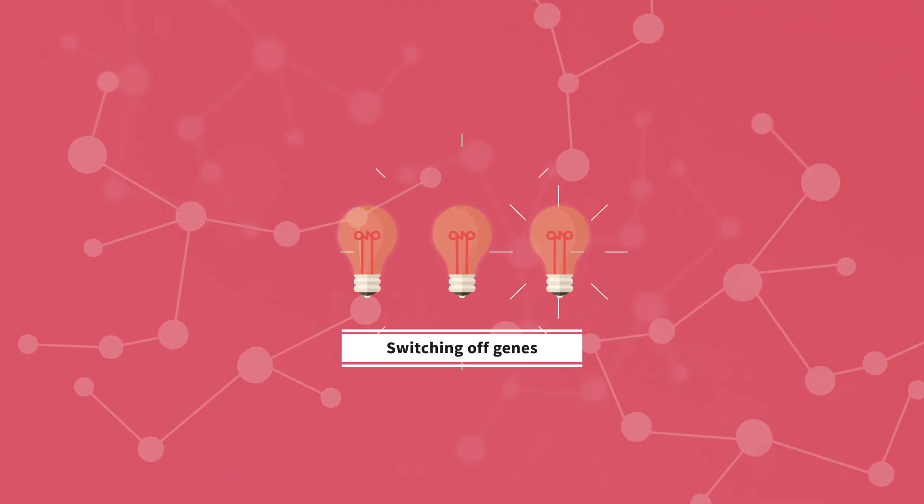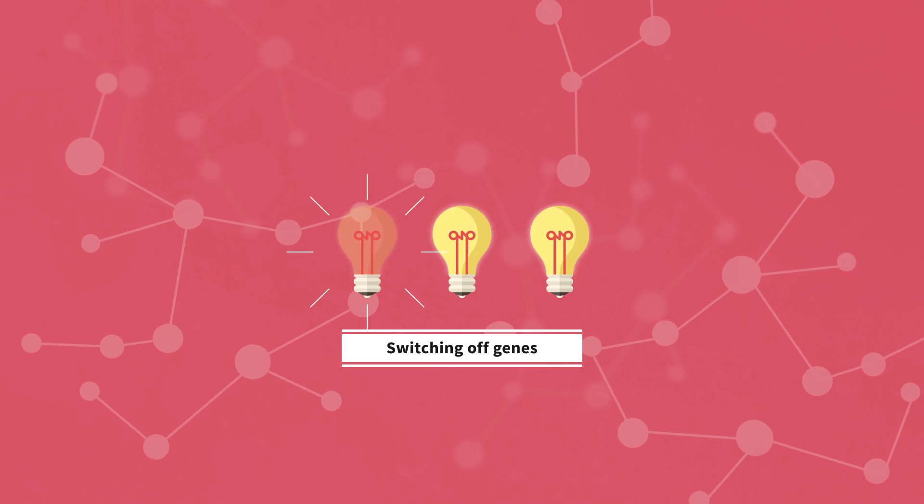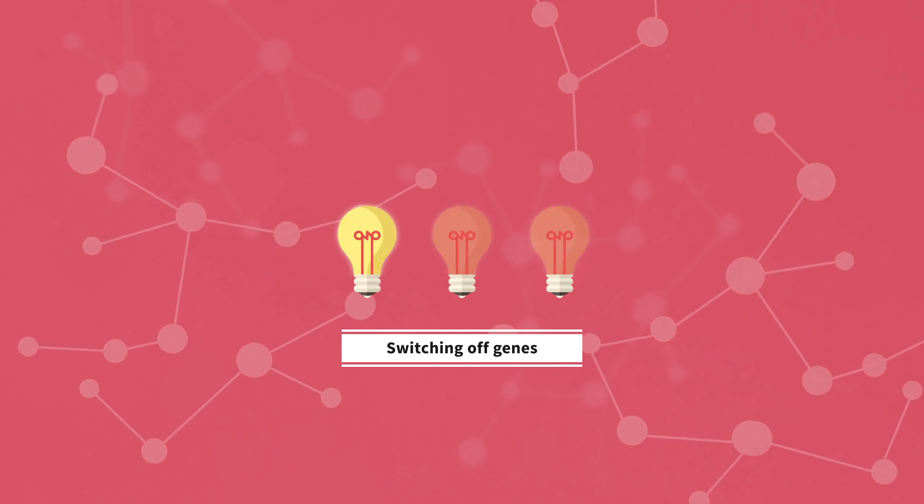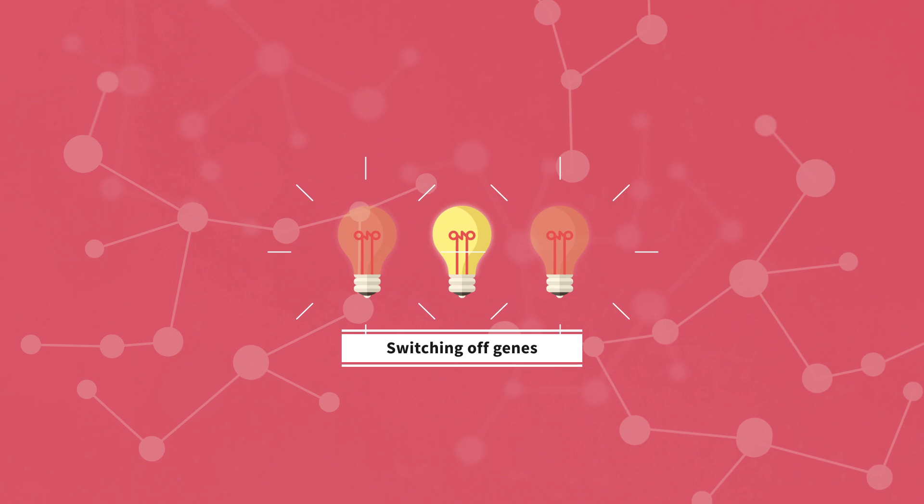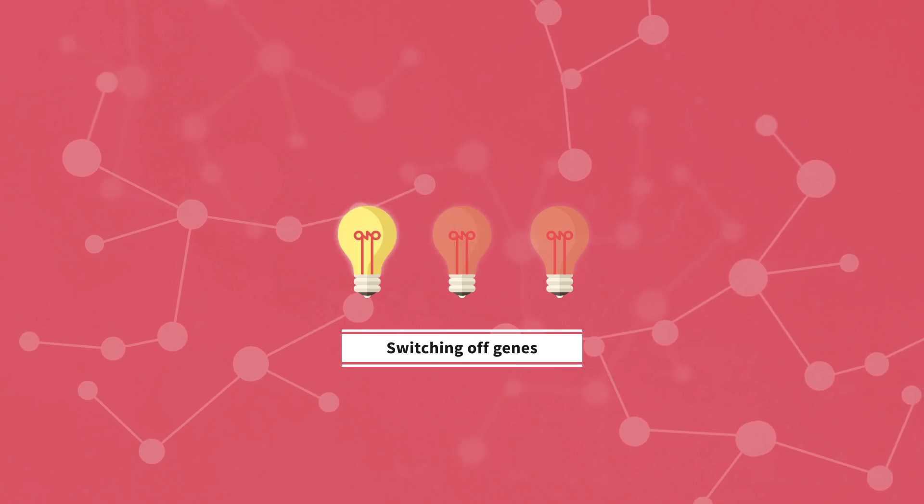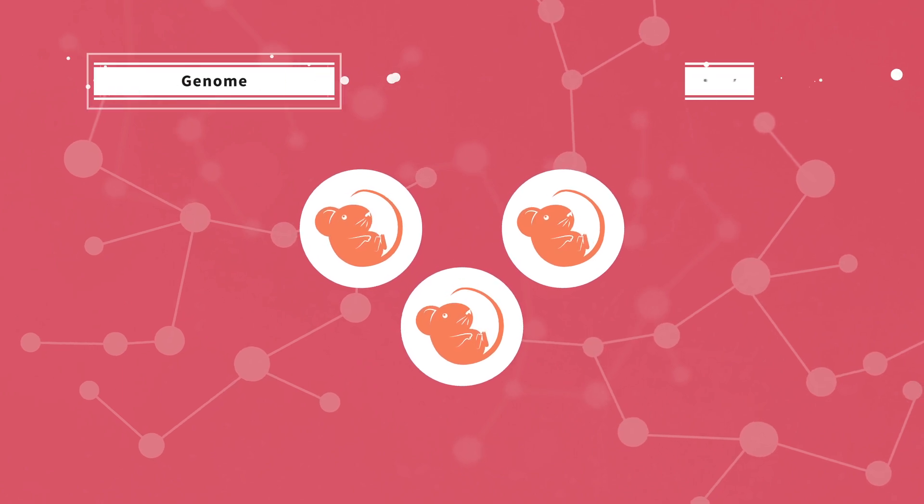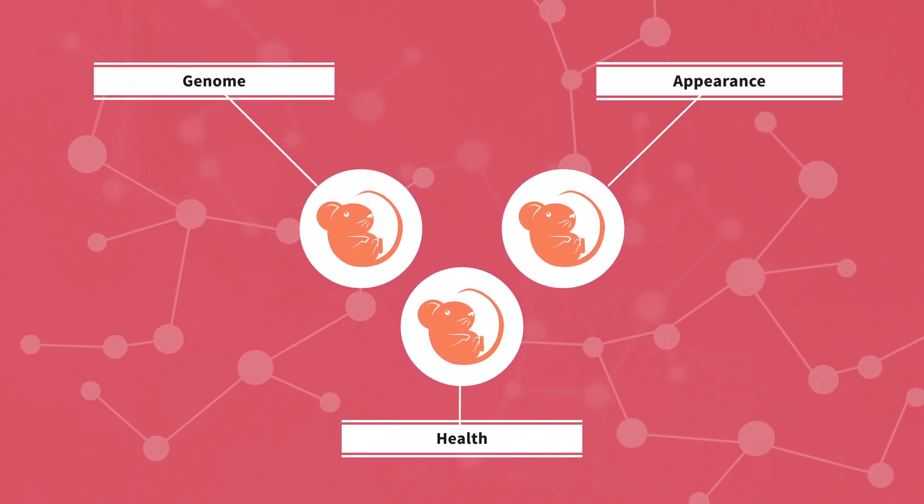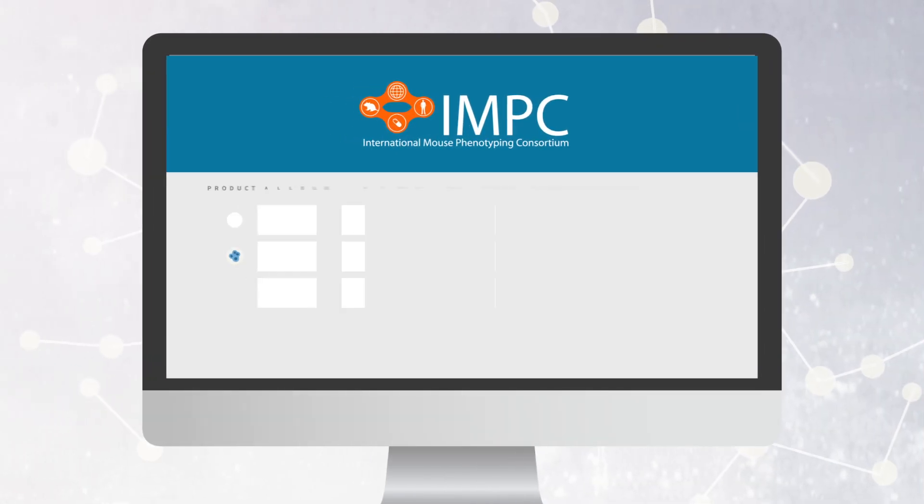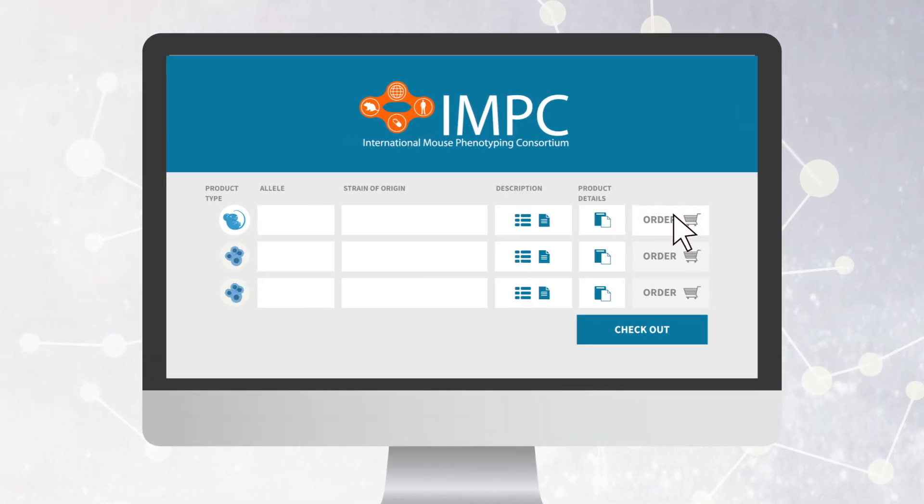Switching a gene off gives useful clues about what it actually does in a living system. The IMPC generates knockout mice in which particular genes are switched off, and gathers a huge amount of information about each mouse - its genome, appearance, and health, for example - and makes this information freely available to everyone.